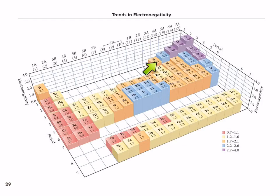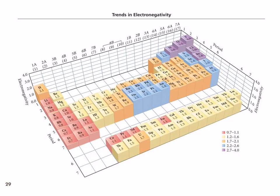Sometimes you will need to actually look at these values — there are some homework questions. On an exam, if you needed the actual numbers I would give them to you; there's no point in memorizing them. But you might need to use some in the homework. Fluorine has an electronegativity of 4; they decided 4 was the maximum and everything else is compared relative to fluorine. The lowest values are over here, around 0.7.